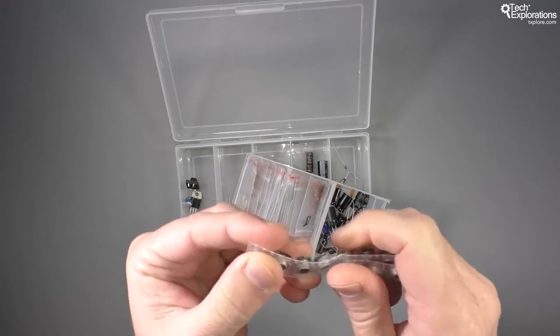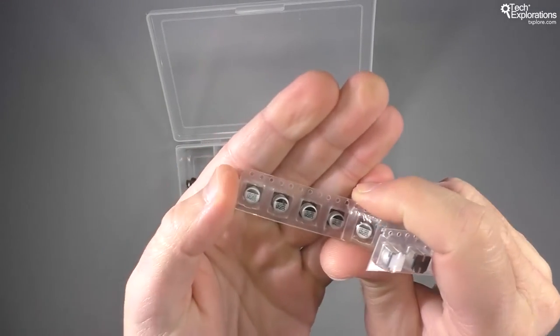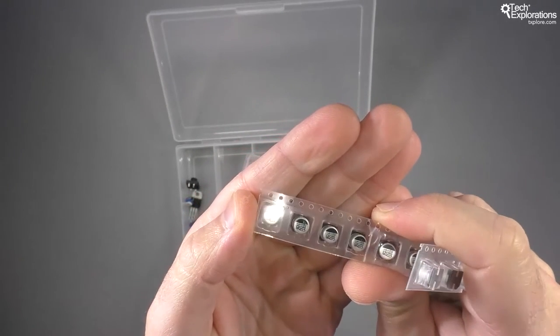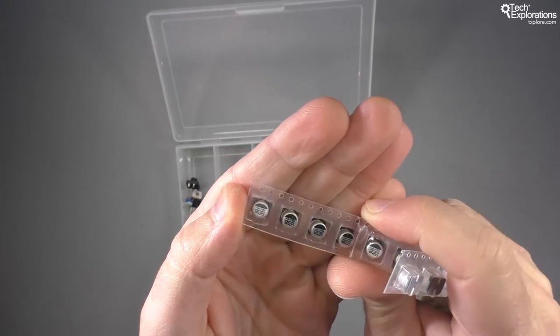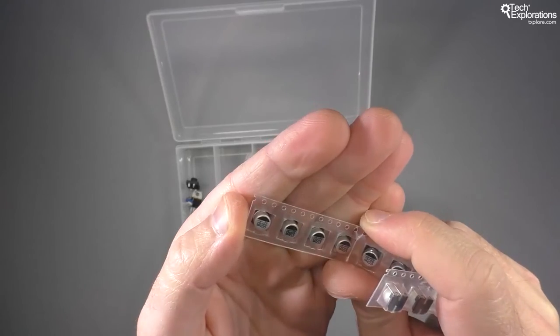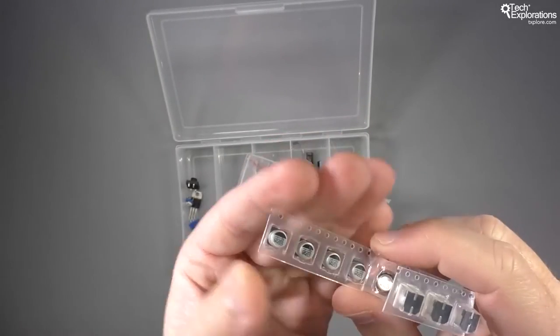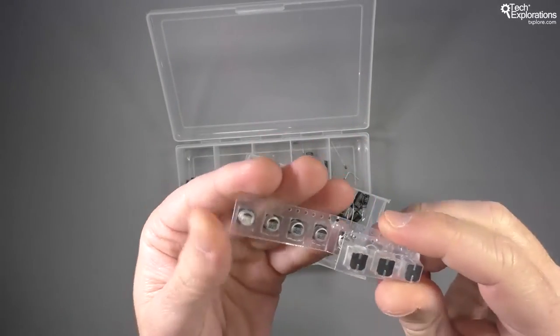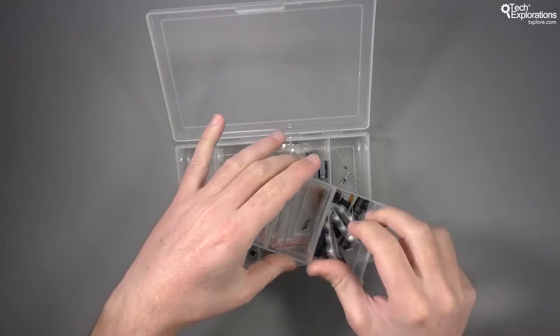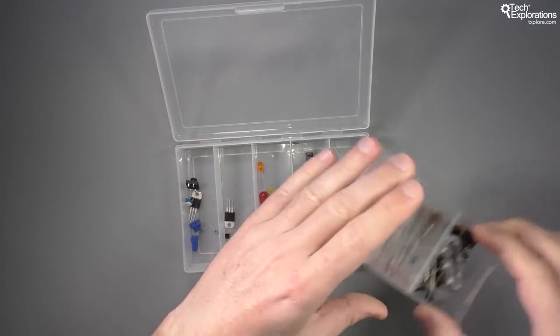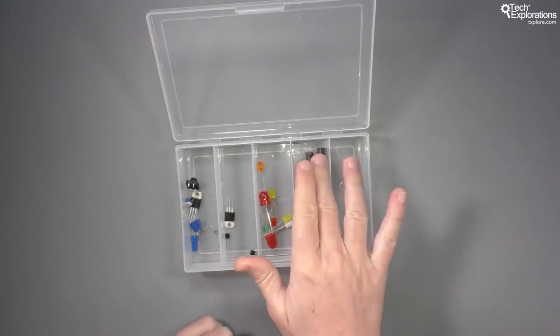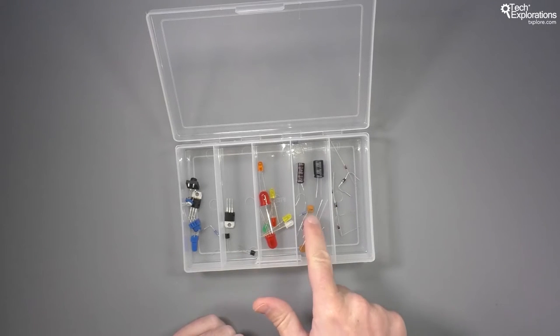And this is an example of an SMD surface mounted capacitor, aluminum. It's still an electrolytic capacitor, it just comes in a different package and you can stick it onto the surface of a PCB. There are a lot more of these kinds but you don't need all of that really, you just need a few electrolytic and a few ceramic capacitors.